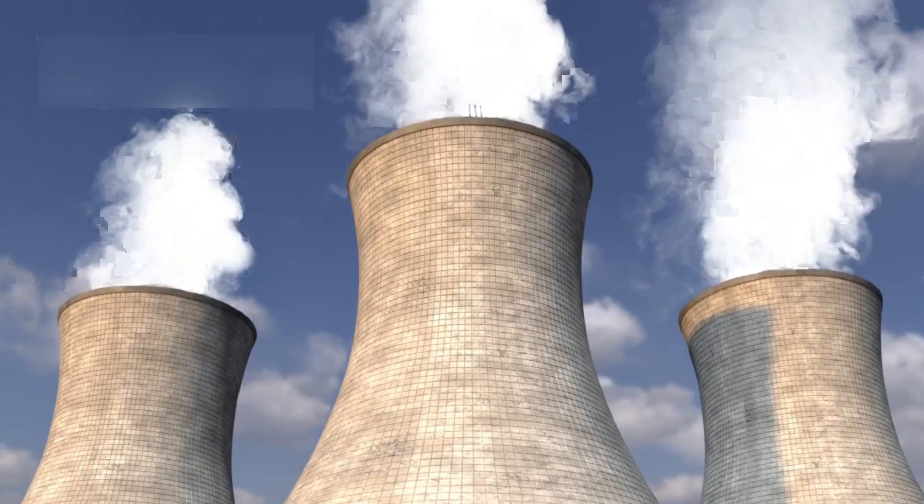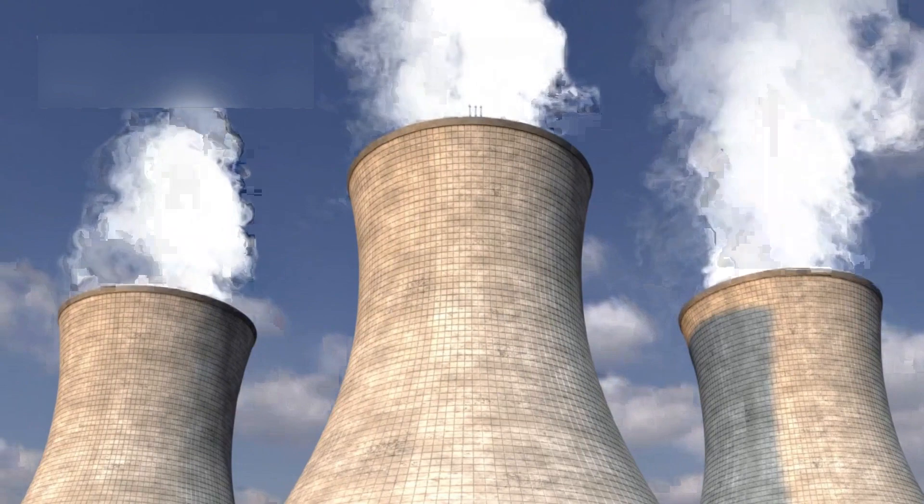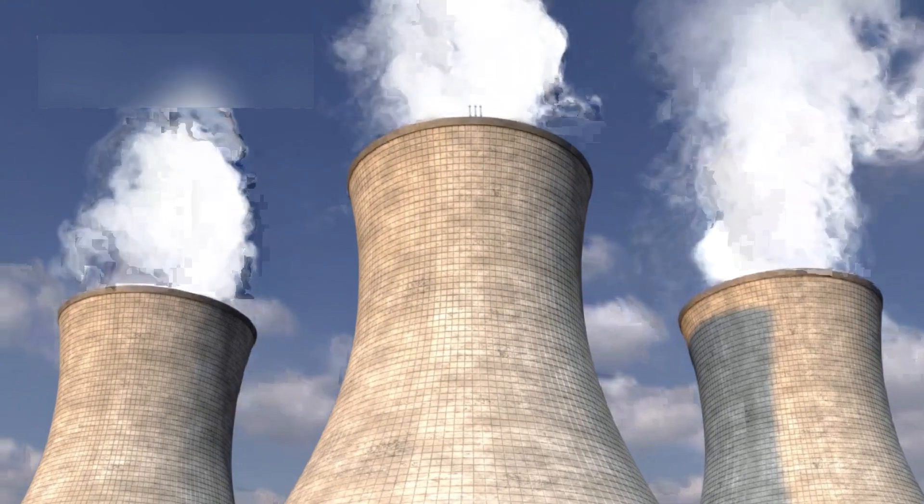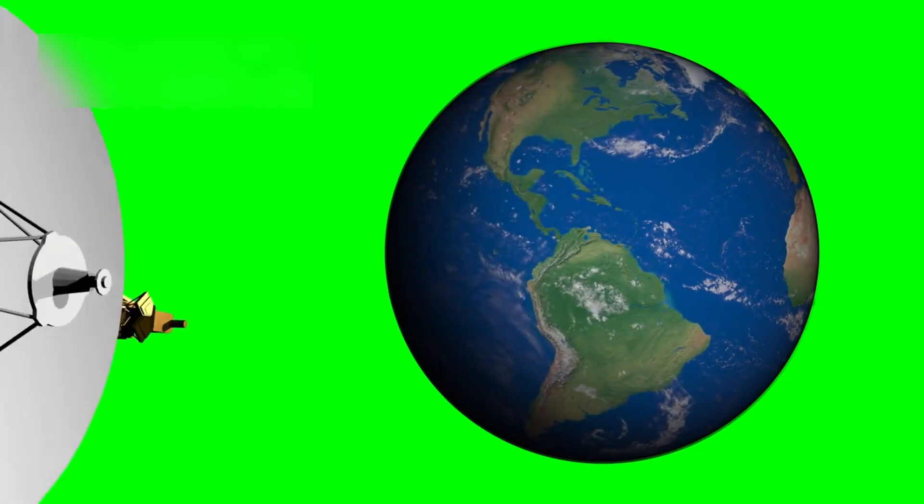The spacecraft's power supply, which uses Plutonium-238, decays slowly over time. Engineers can shut down non-essential systems when needed, allowing Voyager 1 to keep functioning in the coldest and darkest part of space.